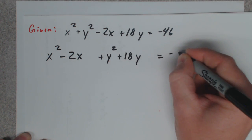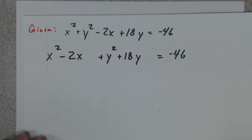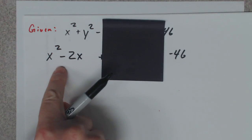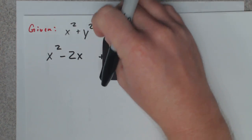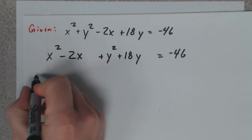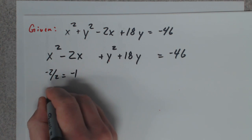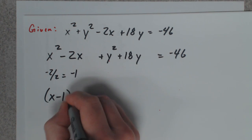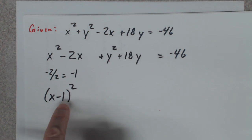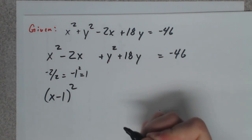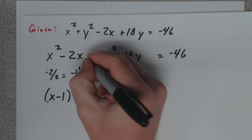Right now I'm rewriting the equation, putting things in order so I can complete the square. I'm going to complete the square first with this part. If I complete the square here, we'll take half of negative 2, which is negative 1, so automatically x minus 1 squared. When I do that, negative 1 squared is 1, so technically I've added 1 to both sides.